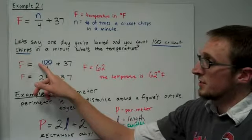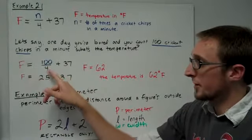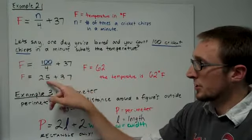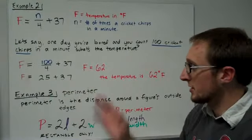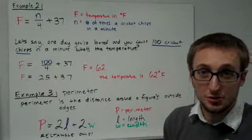Well, basically, that means we're replacing N, number of cricket chirps, with 100. When we do 100 divided by four, we get 25, and 25 plus 37 is 62. So that means F is equal to 62, and the temperature is 62 degrees Fahrenheit.